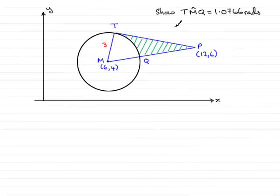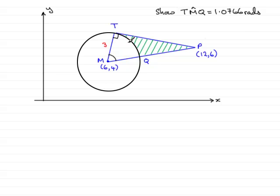In this next part of the question, what we've got to do is show that the angle TMQ is 1.0766 radians, given to 4 decimal places. Basically, what you've got to realise is that when you have a tangent — which TP is — it's going to make 90 degrees with the radius. So, mark that in as 90 degrees.